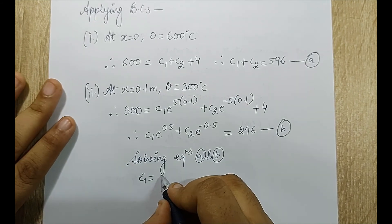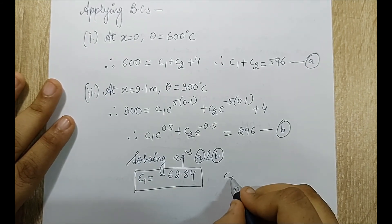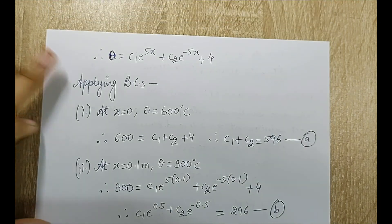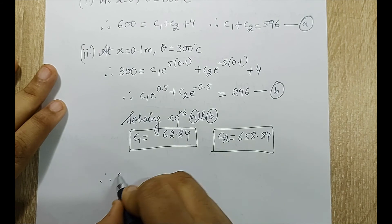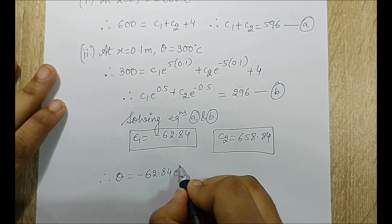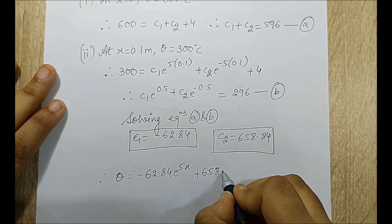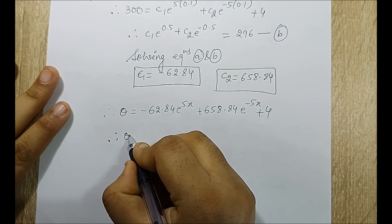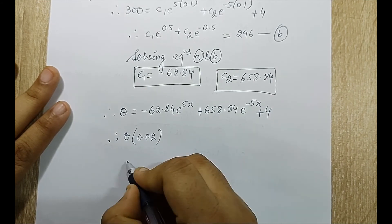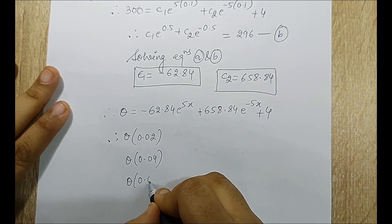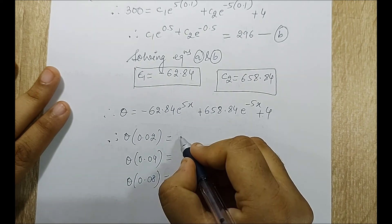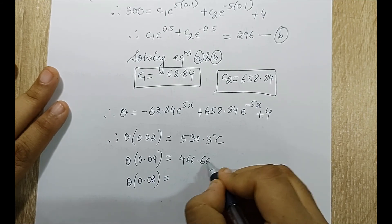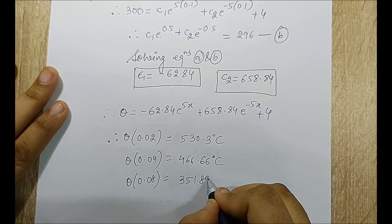Solving gives C1 equals minus 62.84 and C2 equals 658.84. Substituting back: theta equals minus 62.84 e raised to 5x plus 658.84 e raised to minus 5x plus 4. Using this formula to calculate at the required points: theta at x equals 0.02 meter is 530.3 degree Celsius, theta at x equals 0.04 meter is 466.66 degree Celsius, and theta at x equals 0.08 meter is 351.89 degree Celsius.